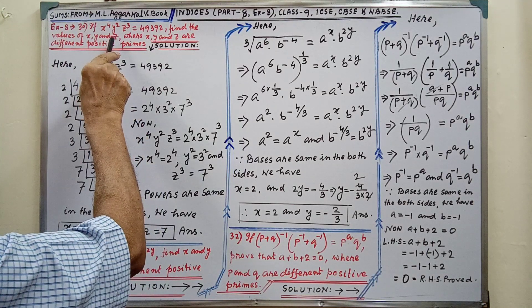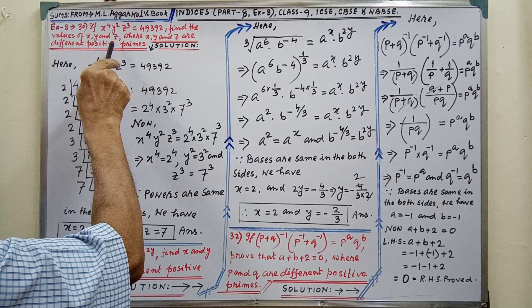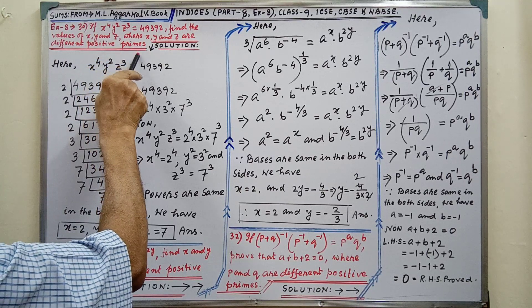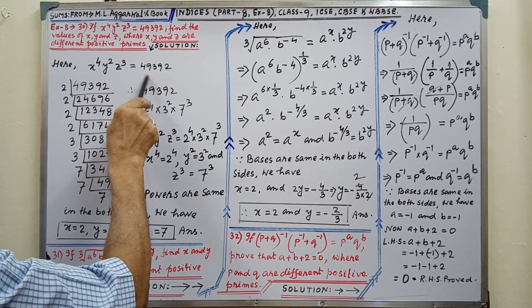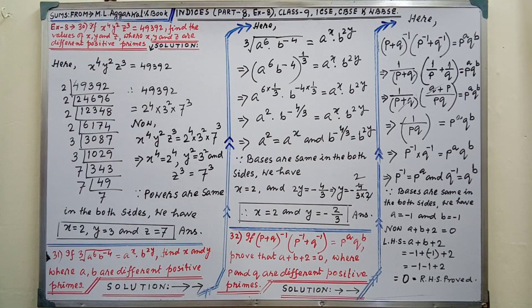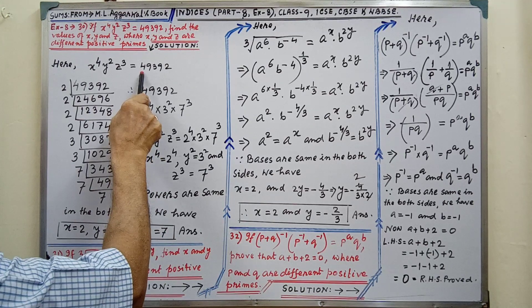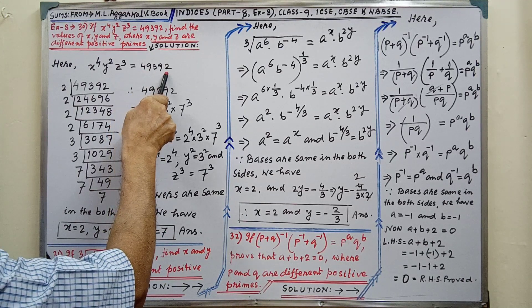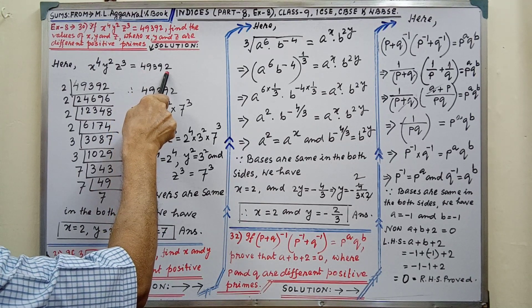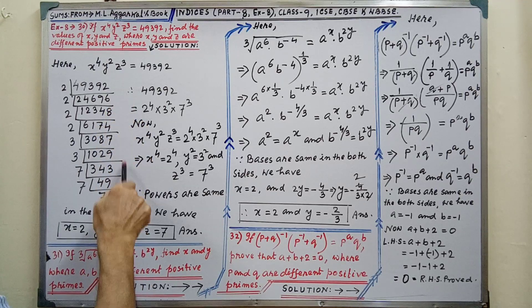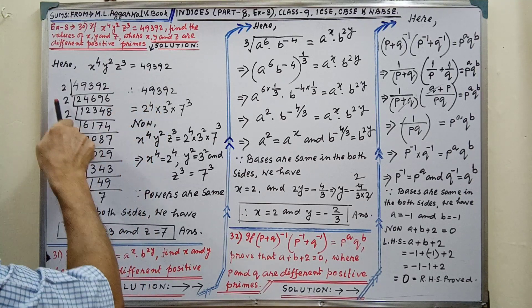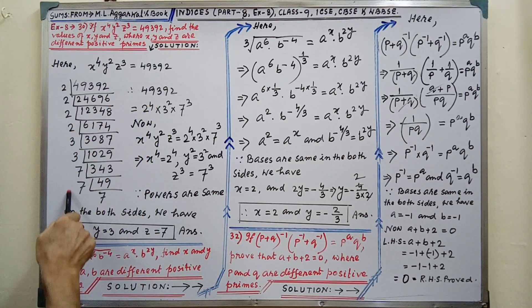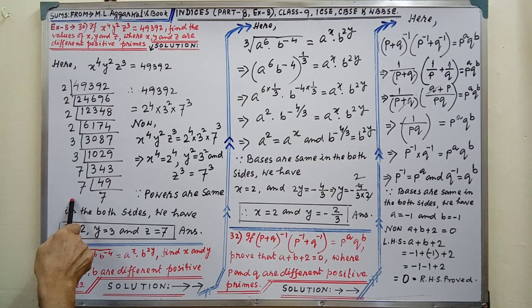You will get the sum in your book and here also it is written clearly. After writing the sum, we have to find out the value of x, y and z. We have to find out the factor of this number. Without doing LCM, we will not get a factor. This is why the LCM you have to do in the fair copy.